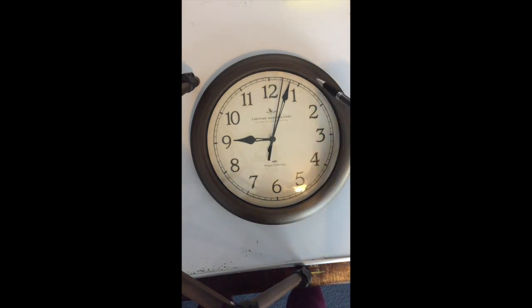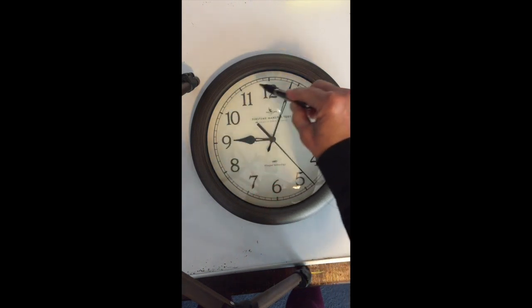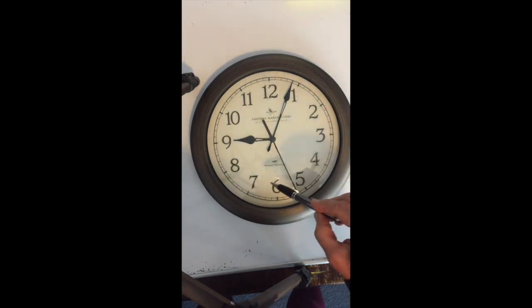The second hand is moving so that it hits every one of these little spaces all the way around the clock. If there are five spaces within each number and there are 12 numbers, 12 times 5 is 60. That means there are 60 seconds in one minute.